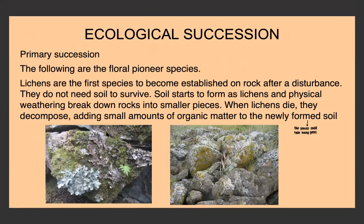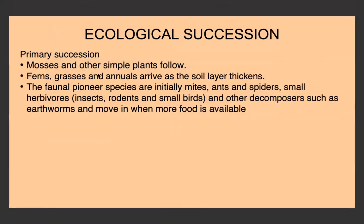Lichens are among the first floral pioneer species to become established because they can establish themselves on rock — they don't need soil to survive. Soil forms as lichens and other types of weathering break down rocks into smaller pieces, and then the lichens die, decompose, and add organic matter and nutrients to the soil. After the lichens, mosses and other simple plants follow. Once the soil begins to thicken, ferns, grasses and annuals arrive. Animal pioneer species include mites, ants, spiders, small herbivores, insects, rodents, small birds, and decomposers like earthworms — they move in when there's more food and soil available.